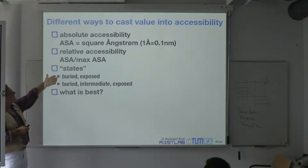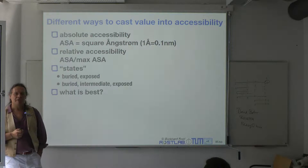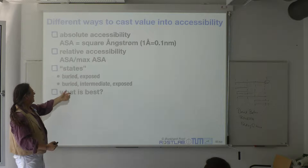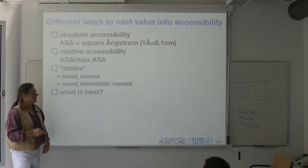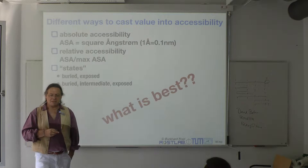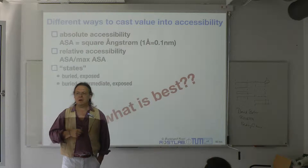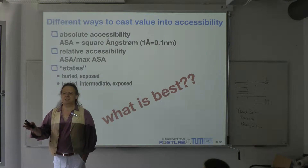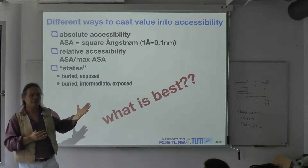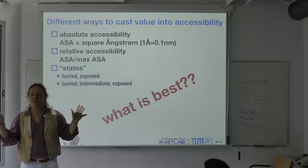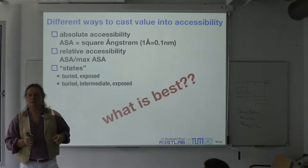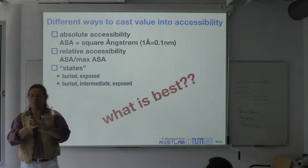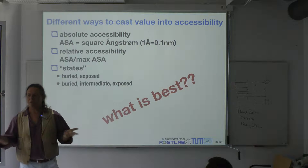We could have different states in which we measure solvent accessibility — just say there are residues that are buried and residues that are exposed to something else. What is the best of all these criteria? I want to predict solvent accessibility: square angstrom, percentage solvent accessibility, or states — buried versus exposed. What is best?